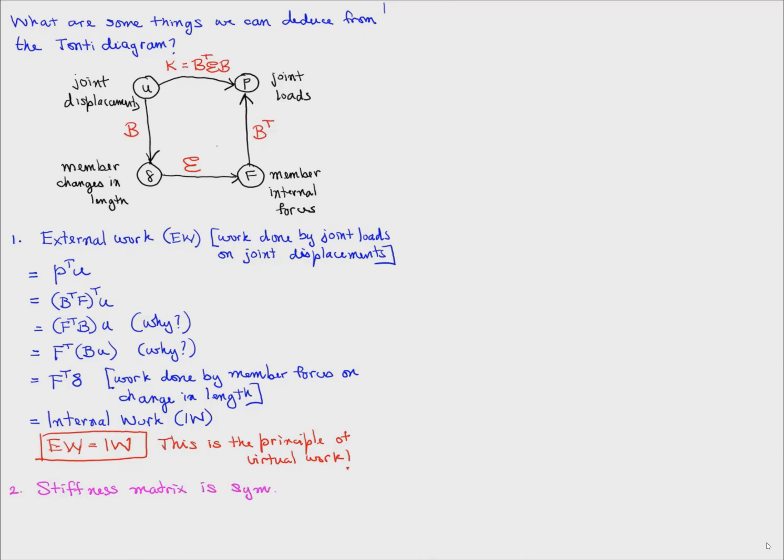The next fact is that the stiffness matrix is symmetric. So k equals b transpose eb. Let's do k transpose. It's b transpose eb, the quantity transpose. That's b transpose e transpose b, which equals b transpose e times b, which is k. So k transpose equals k, so k is symmetric.